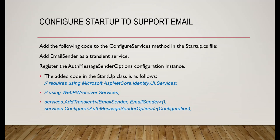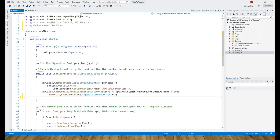After implementing the IEmailSender interface, we'll add the following code to the ConfigureServices method in the Startup file. We'll add EmailSender as a transient service and register the AuthMessageSenderOptions configuration instance. Basically it is services.AddTransient passing IEmailSender and EmailSender, then configure AuthMessageSenderOptions by passing a configuration object. Let's flip over to Visual Studio and do the coding. We have the Startup class open with previously written code.